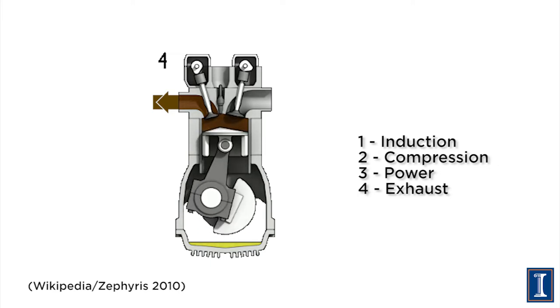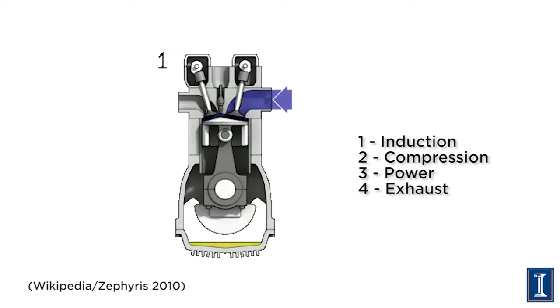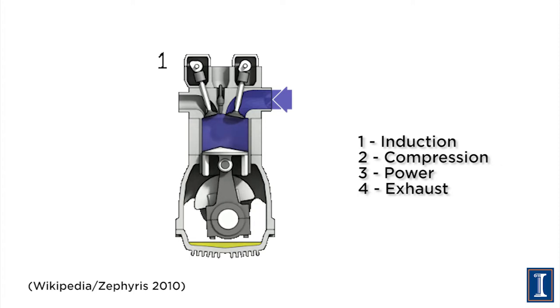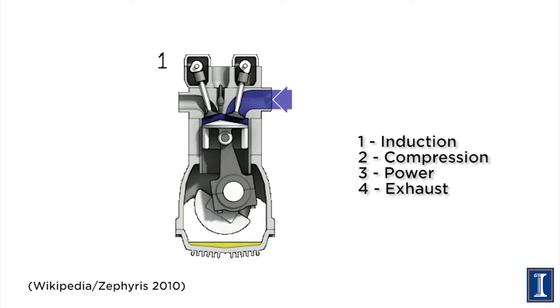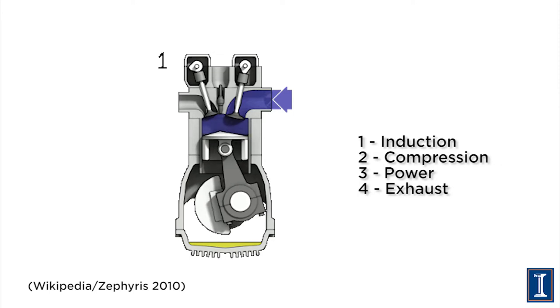Now I have an empty cylinder. I've got to put gasoline and air back into it. The other valve — the intake valve — will now open. The piston will go down, sucking in the air and gasoline mixture. Or maybe we'll use a fuel injector, which triggers at just this point, injecting a mixture of air and gasoline. This stroke, which brings the fuel into the engine, is called the intake stroke. We've gone through three cycles: power, exhaust, intake.